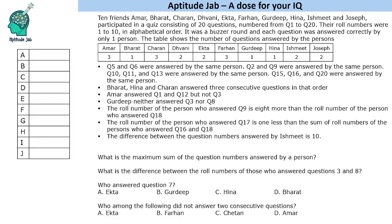Hello everyone, welcome to Aptitude Jab. This set says that there are 10 friends who participated in a quiz that had 20 questions. The questions were numbered 1 to 20 and these people had roll numbers 1 to 10 in alphabetical order. So Amar has roll number 1, Bharat has 2, Charan has 3 and so on till roll number 10. The quiz was a buzz-around format, and each question was answered correctly by only one person. This table gives the number of questions answered by each person.